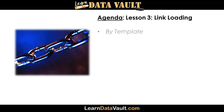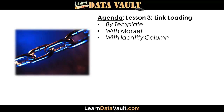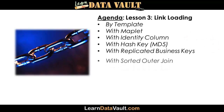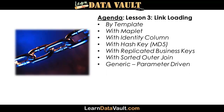Lesson three covers link loading. I'm going to start with a template again using the sequence generator inside the mapping, then move on to the maplet. I'll show you how to load a link with an identity column for bulk loading — identity columns can be found in MySQL, SQL Server, Teradata, and DB2. Then I'll talk about hash keys from a Data Vault 2.0 perspective, which improves performance. We'll also cover another Data Vault 2.0 spec with replicated business keys in the linking structure, sorted outer joins, and then a generic parameter-driven approach for link loads so you can write one link map for links with two business keys, another for three business keys, and so on, allowing you to genericize link loads across the board.